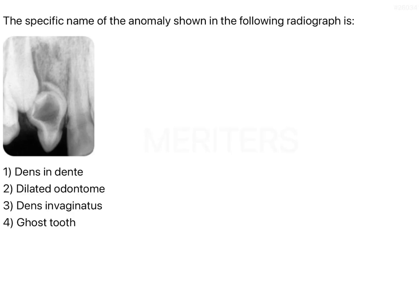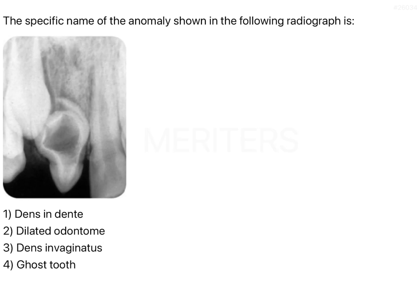The question asks for the specific name of the anomaly shown in the radiograph. What is visible here is the permanent canine, and this is the central or lateral incisor, because this fits with the premolar. This entire structure is what is anomalous.